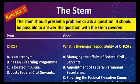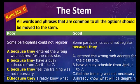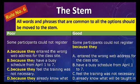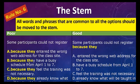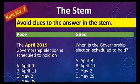Rule number six states that all words and phrases common to all the options should be moved to the stem. For example, if every option begins with 'because they,' harvest that phrase and place it once in the stem: 'Some participants could not register because they...' and let the options flow from there. If words and phrases are repeating across all options, move them to the stem.